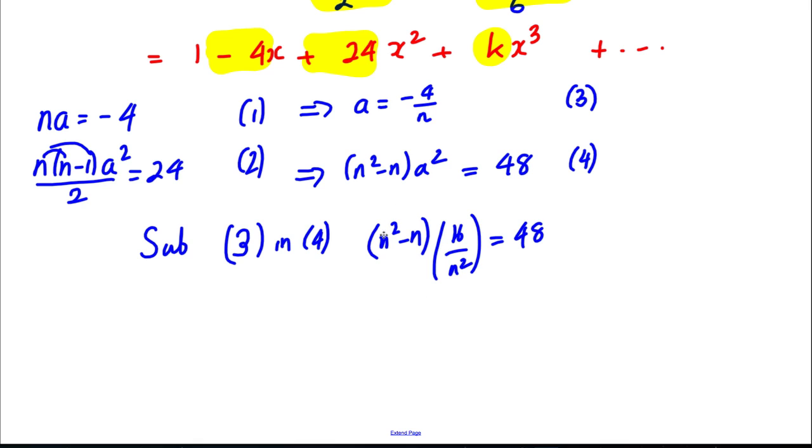OK, now we can multiply this out. This would be N squared multiplied by 16 over N squared, which is 16, and take away N multiplied by this, which would be 16 over N. That would be equal to 48.